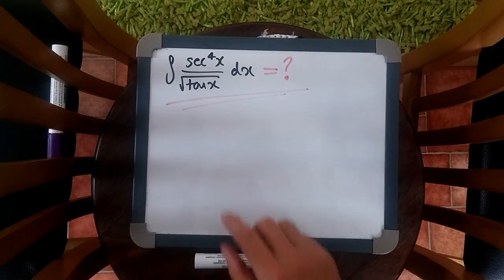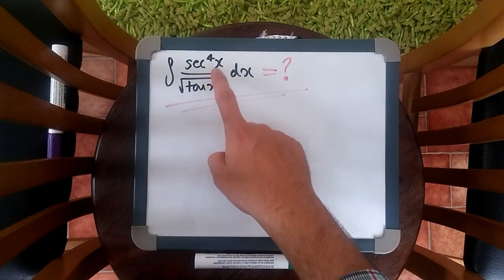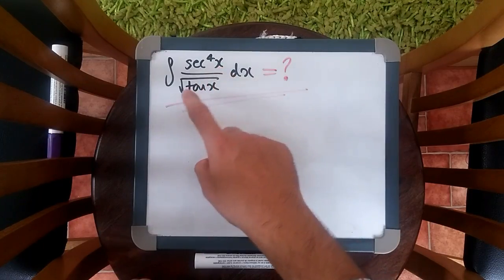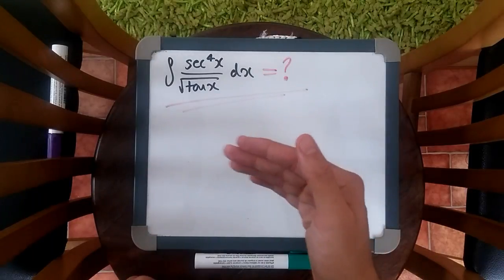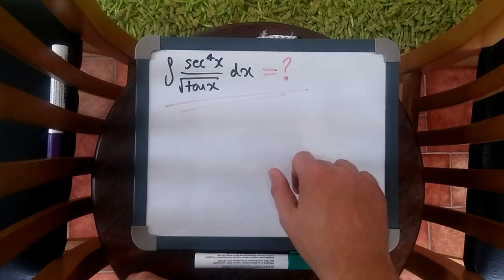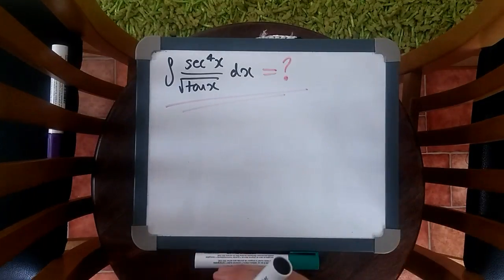You just need to recognize that sec squared x is the derivative of tan x. So tan x and sec squared are actually indirectly related. They're related in two ways, by differentiation and by trig identities. So let's break them both down.